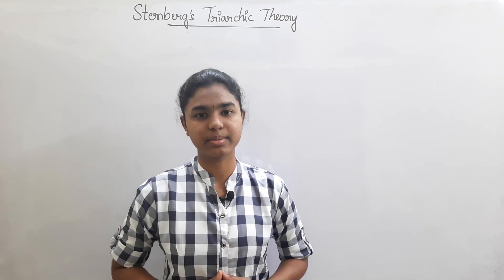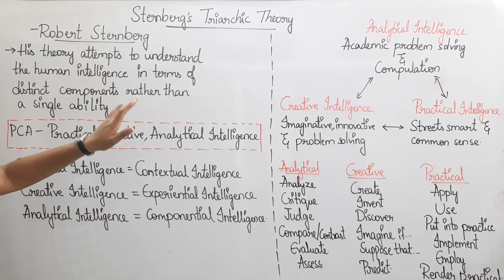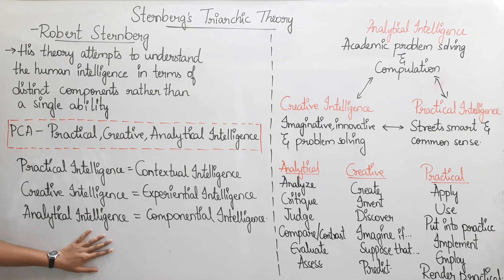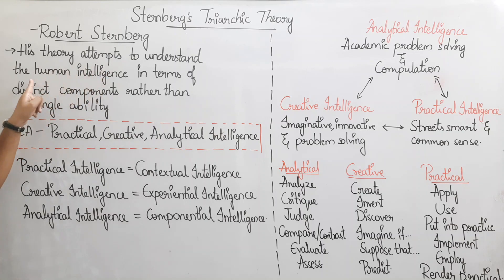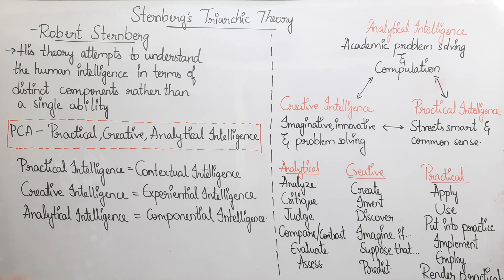Let's get started. Now we are going to talk about the Triarchic Theory. This Triarchic Theory is by Robert Sternberg. His theory attempts to understand human intelligence in terms of distinct components rather than a single ability.